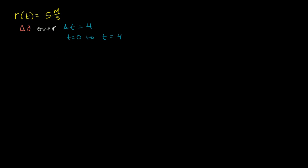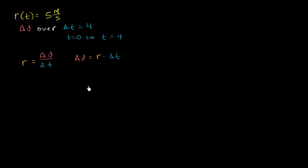One way to think about it is that a rate, by definition, is nothing but a change in some quantity — in this case distance — over a change in some other quantity, in this case time. Or another way to think about it: if we multiply both sides by change in time, you get change in distance equals rate times change in time. This is very close to the pre-algebra formula distance equals rate times time, which comes from the definition of what a rate is — a change in one quantity with respect to another.